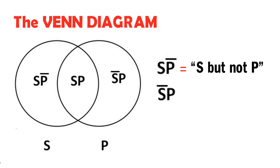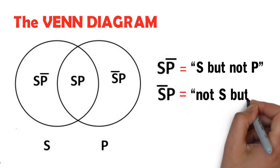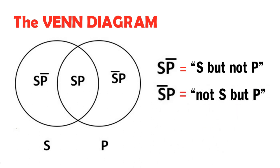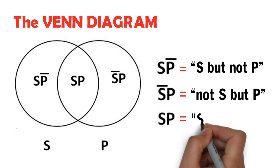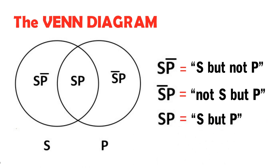And this is read as 'not S but P,' and this represents the class of things that are part of P but are not part of S. And this is read as 'S and P,' and this represents the class of things that are both parts of S and P.